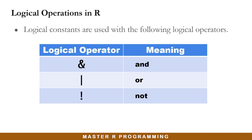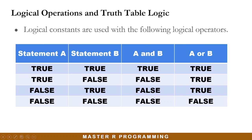These logical constants are used with the following logical operators. We have the ampersand symbol, which means AND. We also have the vertical bar, or what we call the pipe operator, which means OR. We also have the exclamation symbol, which means NOT. These logical operators and the logical constants can be combined together to make decisions based on certain conditions.